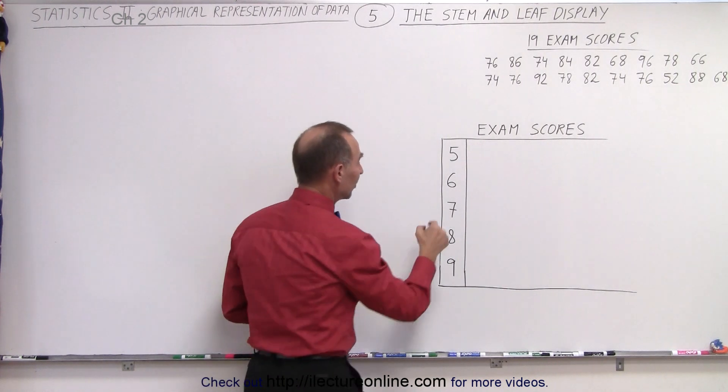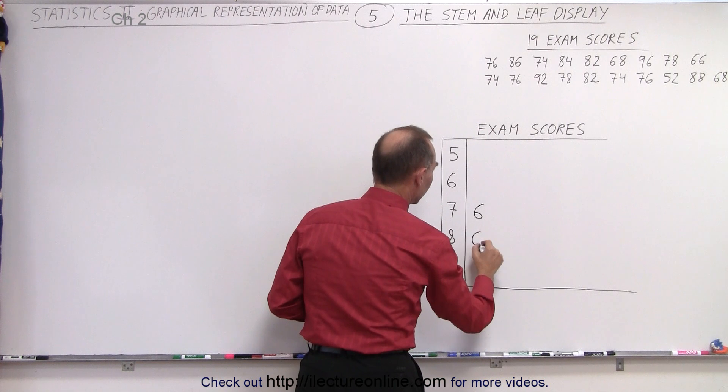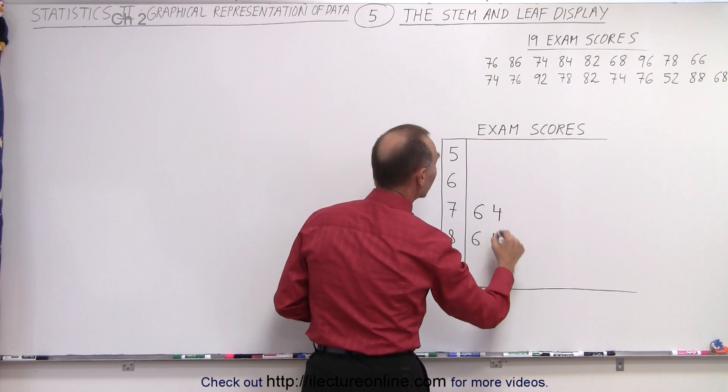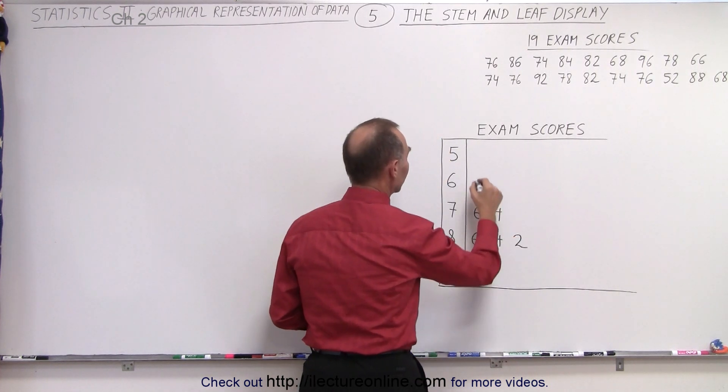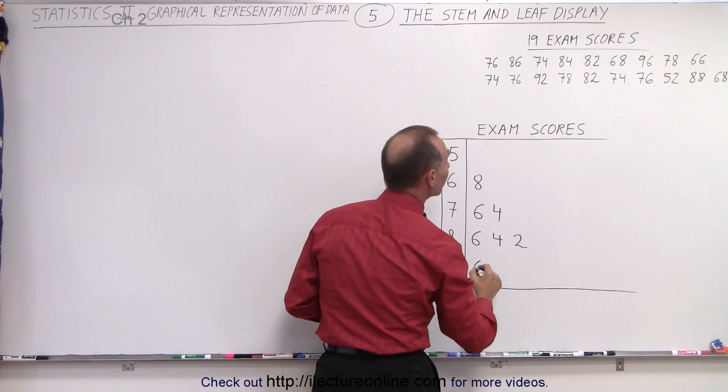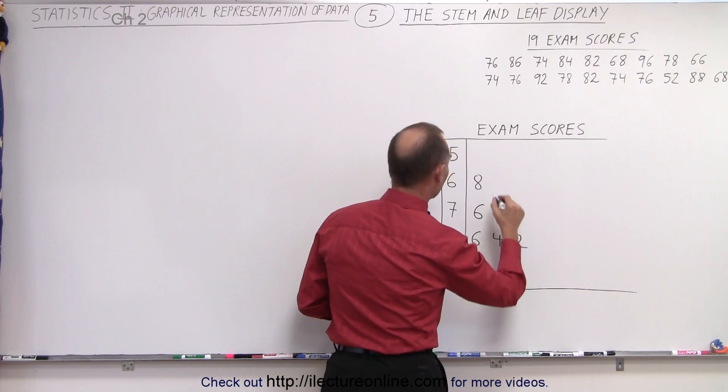So for 76, we put a 6 there. 86, put a 6 there. 74, put a 4 there. 84, put a 4. 82, and I think you begin to see the pattern. 68, then we have 96, 78, and 66.